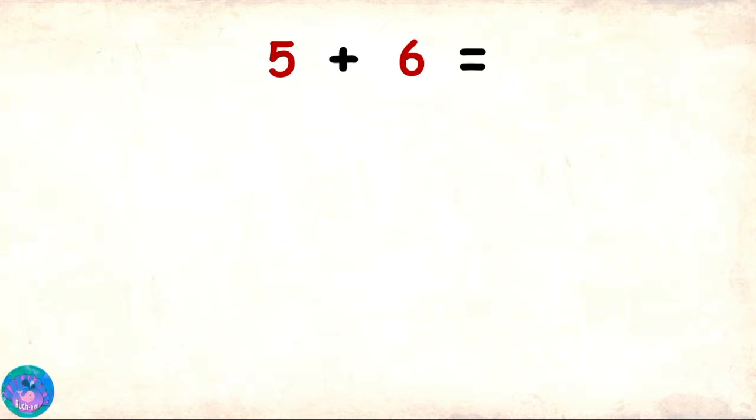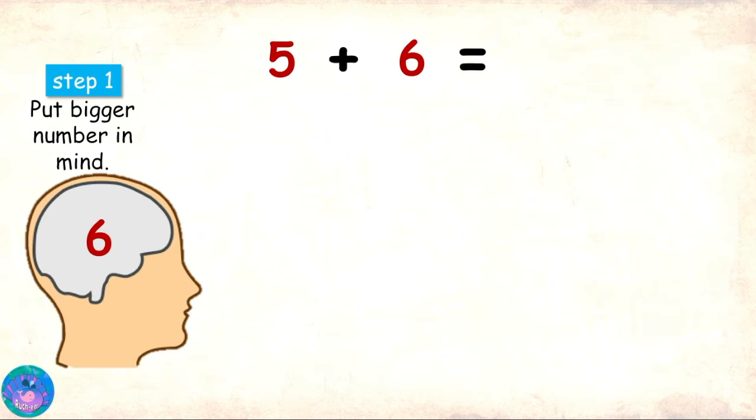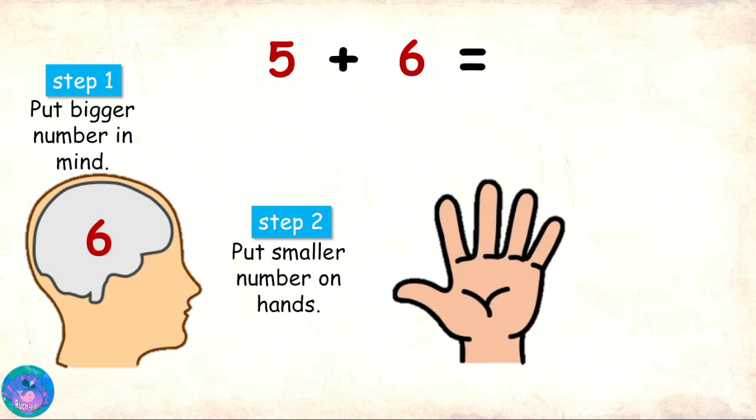Step 1. Put the bigger number in mind. 6 is the bigger number. So, I will put 6 in my mind. Step 2. Put the smaller number on hands. 5 is the smaller number. So, I will raise 5 fingers.